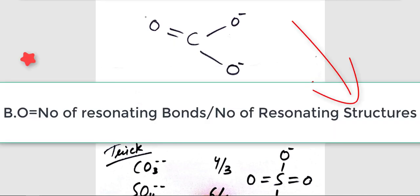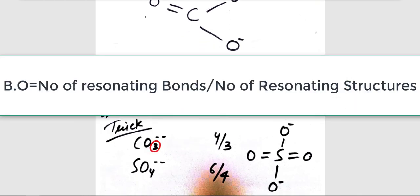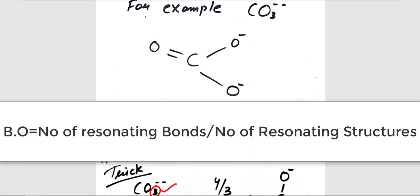Now, how are you going to calculate the number of resonating structures? We have the trick for that too, which is this number. This number represents the total number of resonating structures which a molecule can have. So what you have to do is calculate the number of resonating bonds.